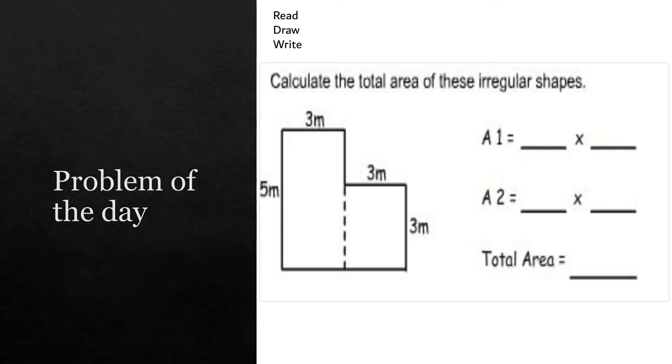Before we start, we always want to start with our read, draw, write. We already read it, we're going to use the pictures kind of today to do our draw part, and then we always do the total or the write part. The total area is blank meters. Let's go ahead and break this up. It's already partitioned for us, but if you get a figure that is not partitioned or divided for you, you can go ahead and just find an easy way to partition this.